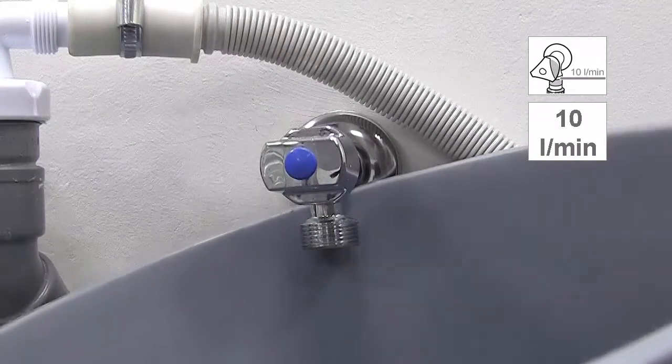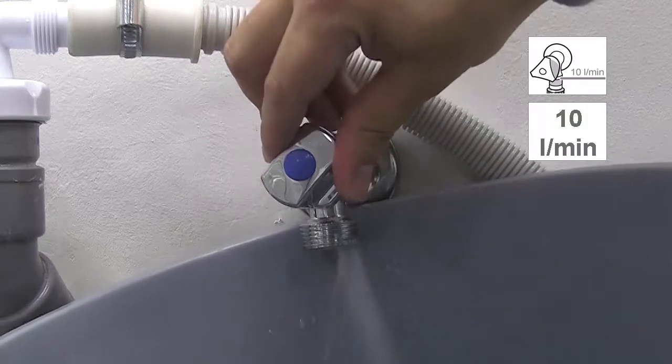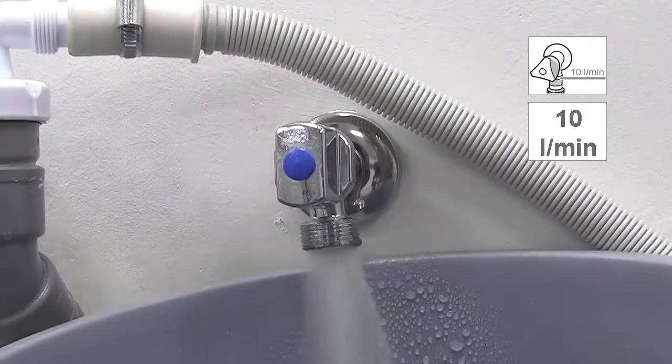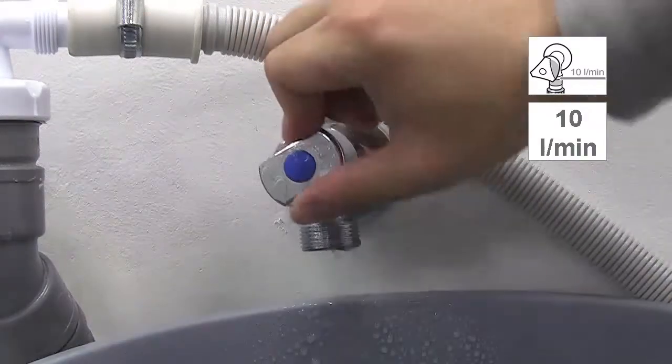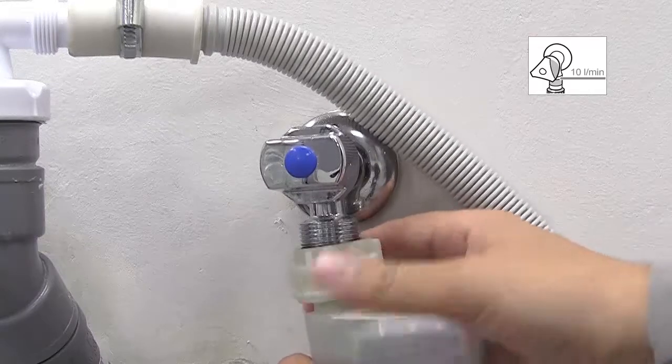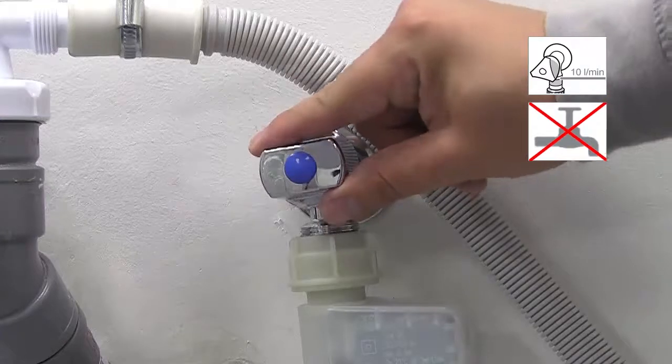Then, place a bucket under the water supply and fully turn on the water. Once you have checked the tap is running at 10 litres per minute, turn it off, reattach the hose and turn the supply back on.